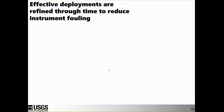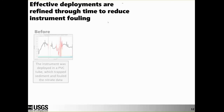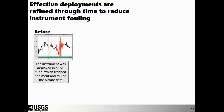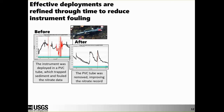Maybe one of the most important components of a water quality deployment is constant refinement through time — trial and error where modifications reduce instrument fouling. A time series graph of nitrate shows periods in red where data were deleted from the database because the instrument was fouled. Here, the instrument was deployed in a PVC tube that trapped a lot of sediment, consistently fouling the nitrate data. We removed the plastic case, which resulted in a much cleaner record.